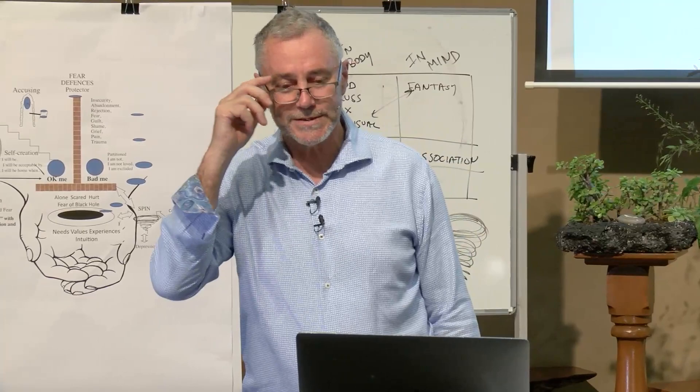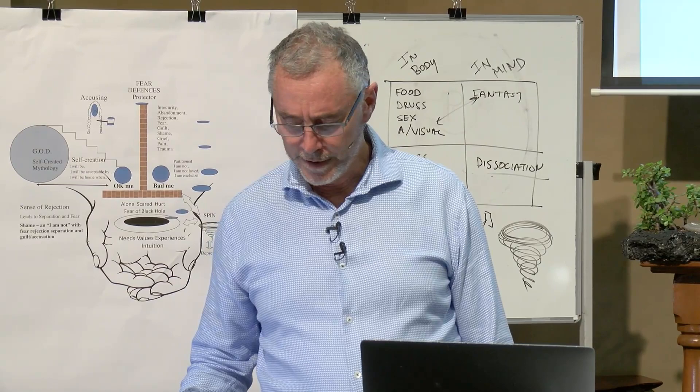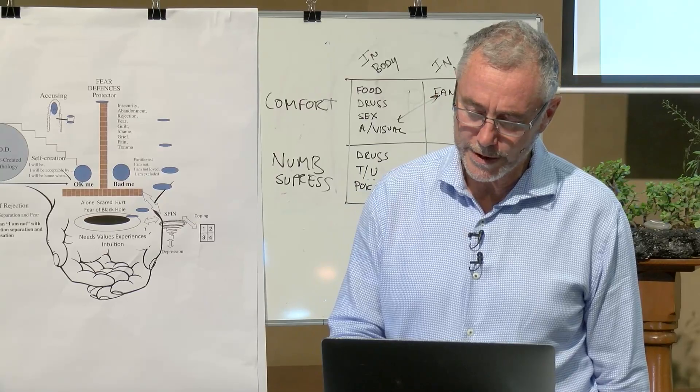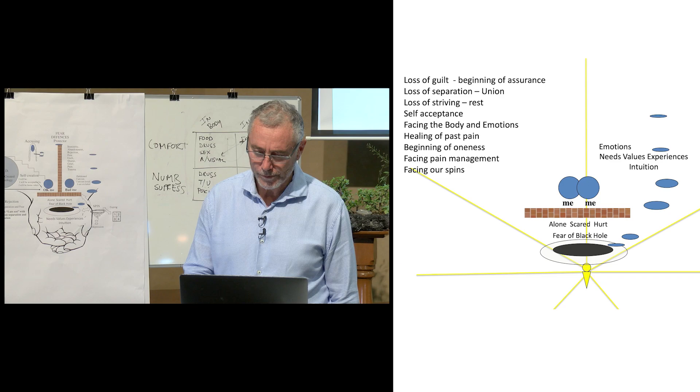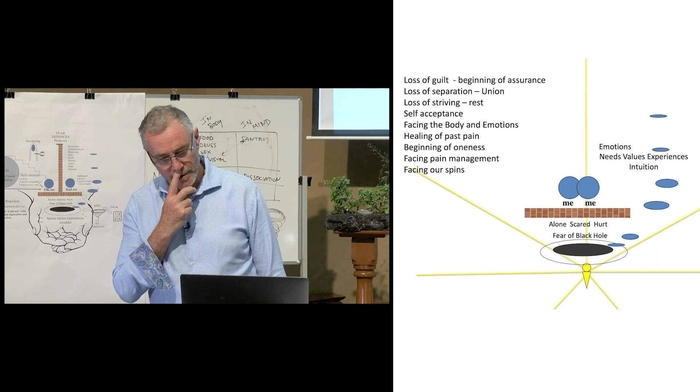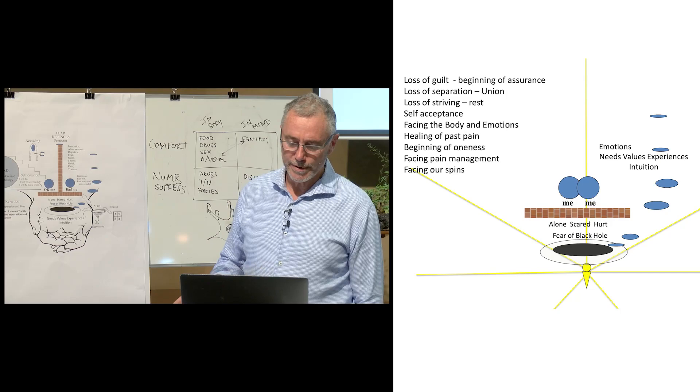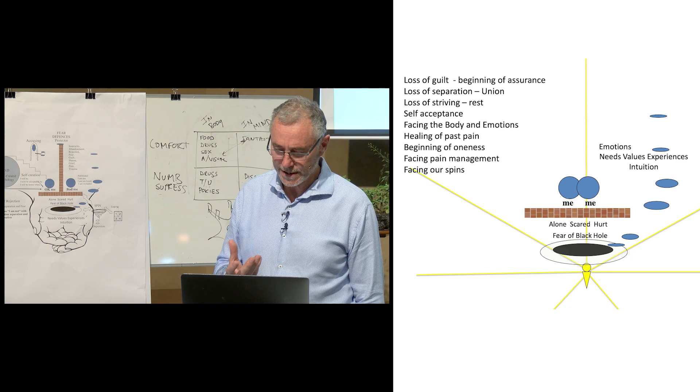That's how it works with our facing things. Grief is required and we can let things go, and that tornado will drop down. I've got loss of guilt, assurance, loss of separation, knowing union. I'm not climbing to heaven, I'm abiding, I'm dropping down and resting. I'm accepting my being, facing all the emotions and parts. Past pains are coming back. I'm beginning to integrate. I've got my pain under control. I'll face my spin.